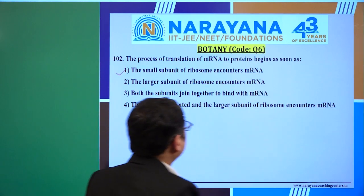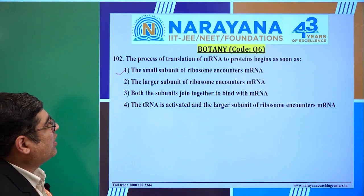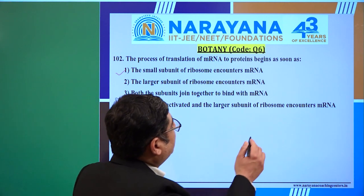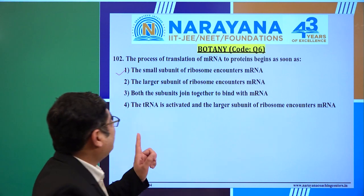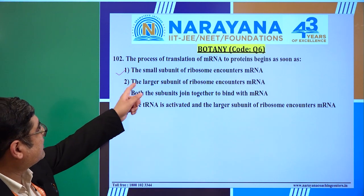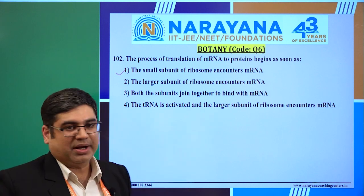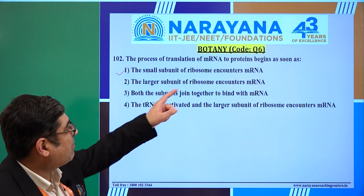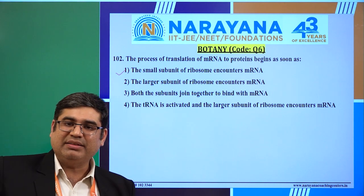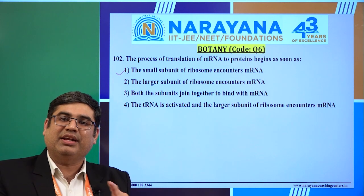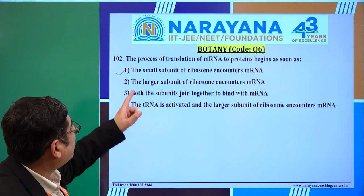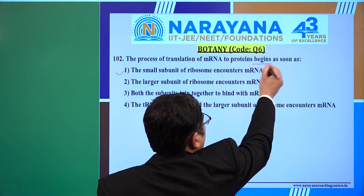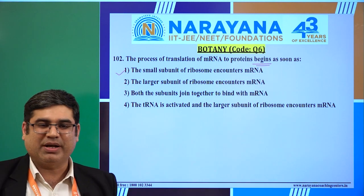We move ahead to the second question, which is question number 102 in code Q6. The question is: the process of translation of mRNA to protein begins as soon as — the first option being: the small subunit of ribosome encounters mRNA. We know that when translation begins, the mRNA joins with the small subunit, whereas the large subunit finally encounters with the tRNA. Since they are asking about when translation of mRNA begins, the first option would be correct.